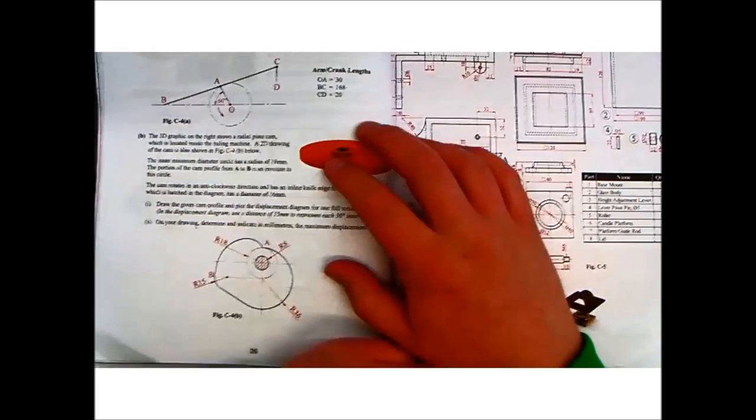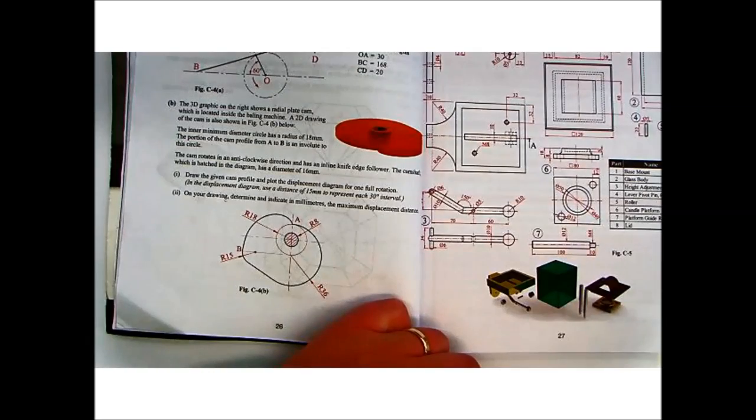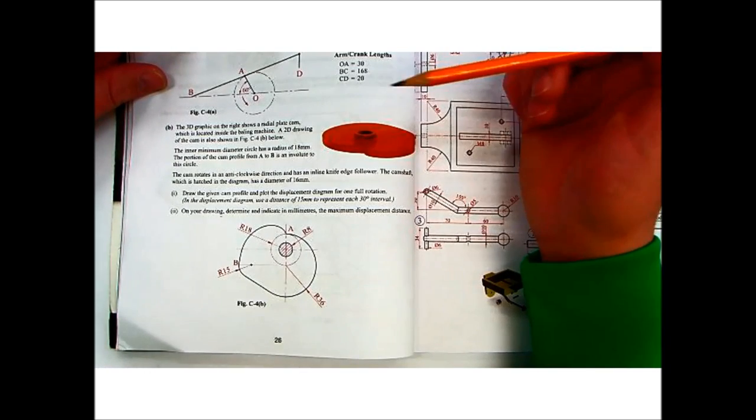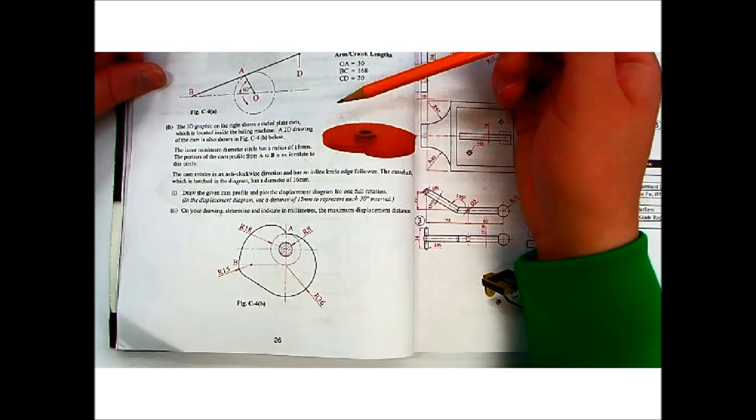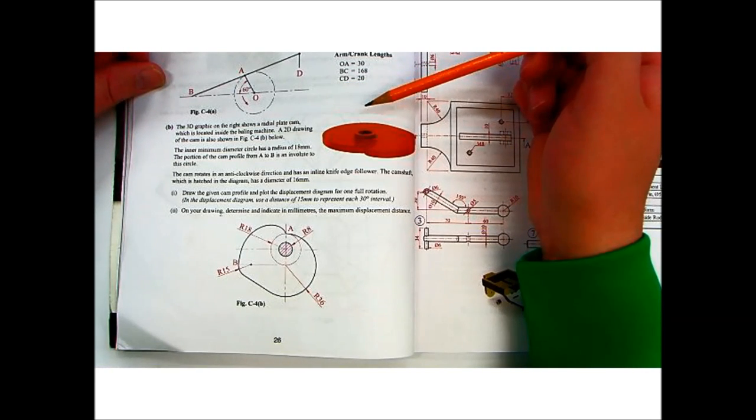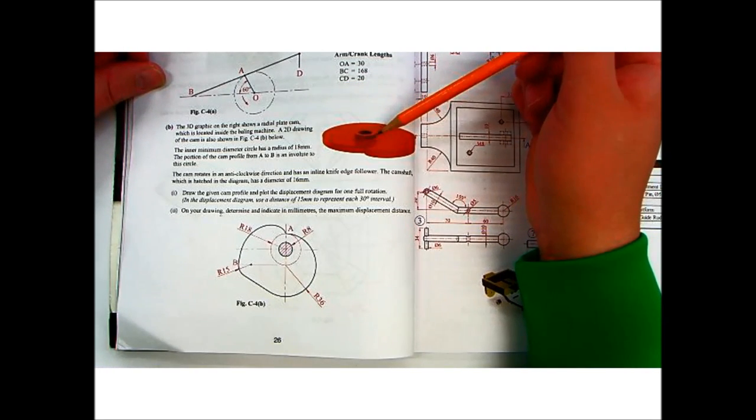Okay, so this one is a CAMS question, and as always read through it. The CAMS question has a lot of information in the actual question, so make sure you read through it and understand all the information they're giving you. So 3D graphic on the right shows the radial plate CAM, which is located inside the baling machine. The 2D drawing of the CAMS is also shown in figure C4 below.